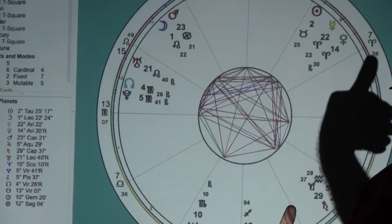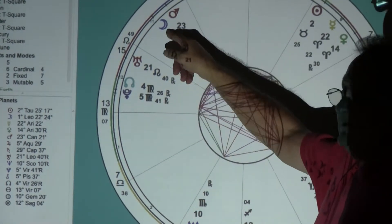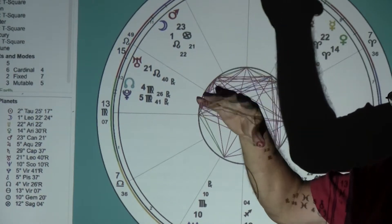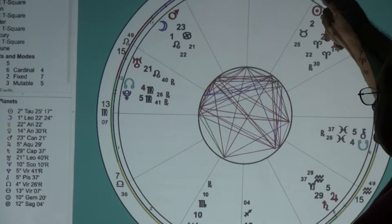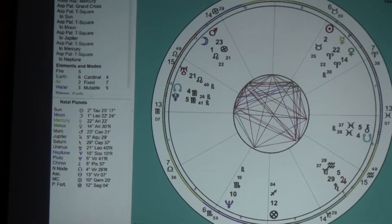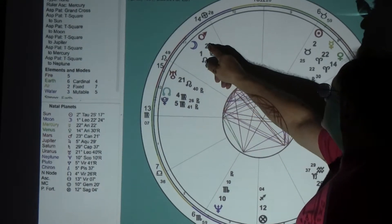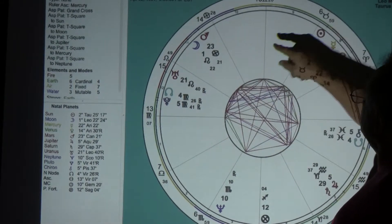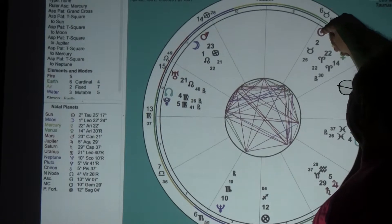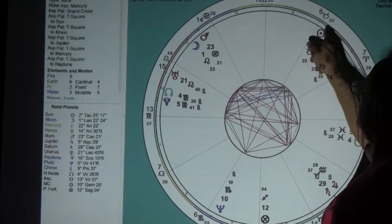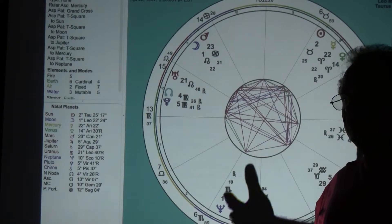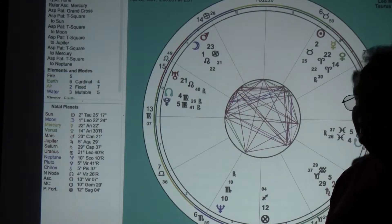It's also conjunct the Moon, which means her feelings have been hurt a lot in life — she's been injured emotionally as well as physically. The Sun at two degrees Taurus is exactly squaring the Moon within a degree. It's also bringing in the square to Mars. We're talking about a grand cross. A grand cross means suffering on a large scale.